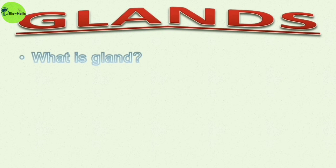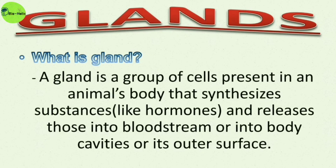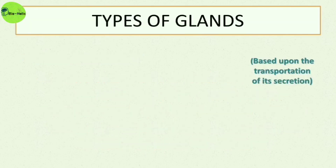But what is a gland? A gland is a group of cells present in an animal's body that synthesizes substances like hormones and releases them into the bloodstream, into body cavities, or onto its outer surface.